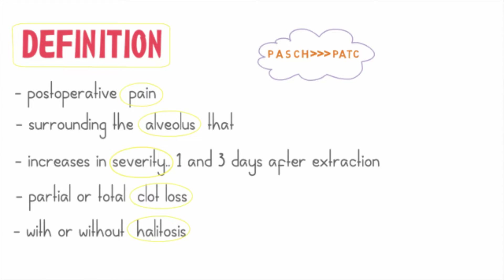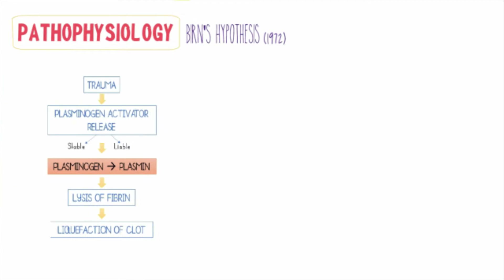The pathophysiology of dry socket can be best explained with Burns' hypothesis, given in 1972. Dry socket is mainly the consequence of fibrinolytic activity or fibrinolysis — the degradation of fibrin present in the blood clot. This may occur after a tooth extraction either due to trauma or infection. Trauma may lead to plasminogen activator release. There are two kinds of plasminogen activators: the stable and the labile kind. It is believed the stable kind remains locally and is responsible for dry socket.